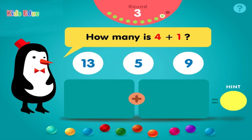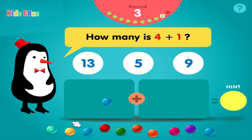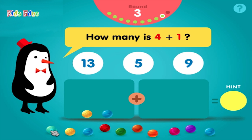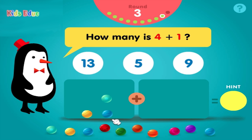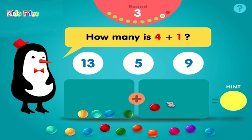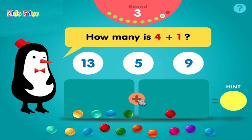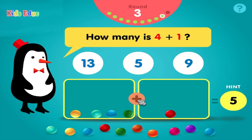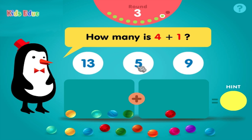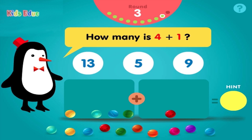How many is four plus one? One, two, three, four, plus one, equals five. Sweet.